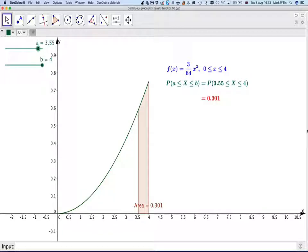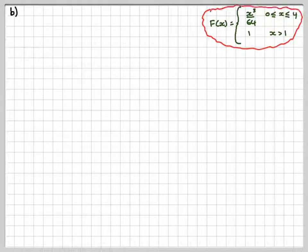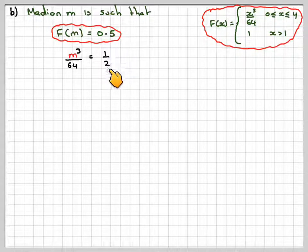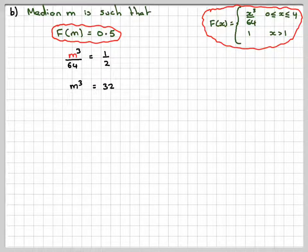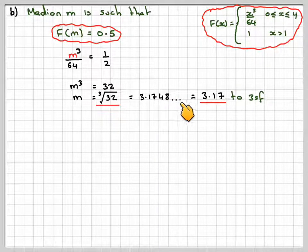It's easier to use the cumulative distribution function for this. The median M is such that F(M) = 0.5. Putting M in: M³/64 = 1/2. Multiplying both sides by 64 and dividing by 2, we get M³ = 32. Therefore M = ∛32, which on a calculator gives a value of 3.1748, or 3.17 to three significant figures.